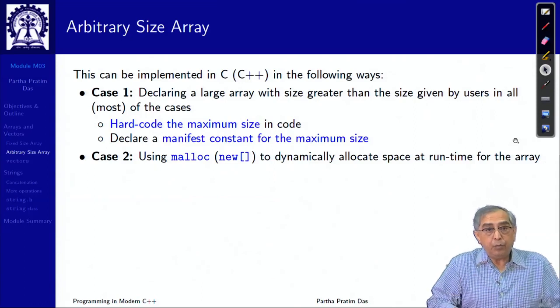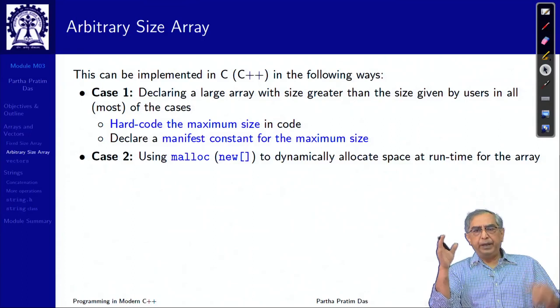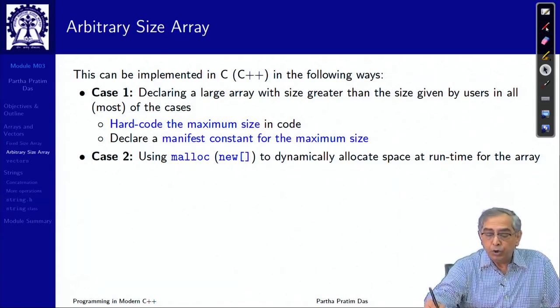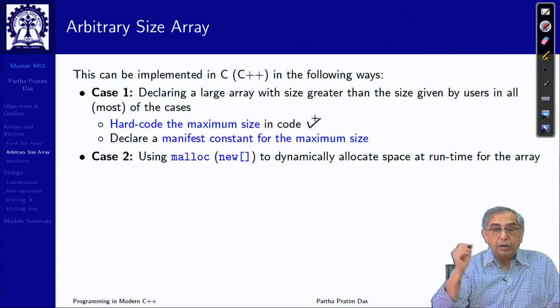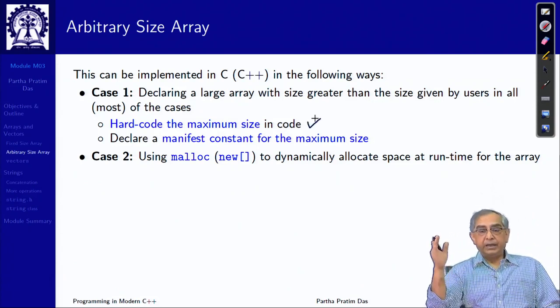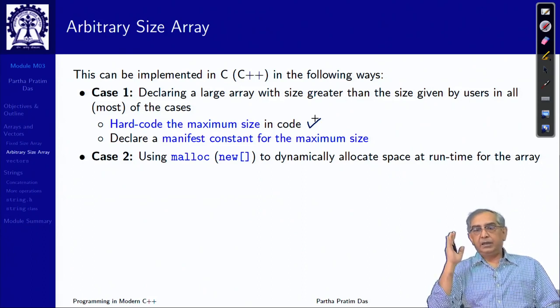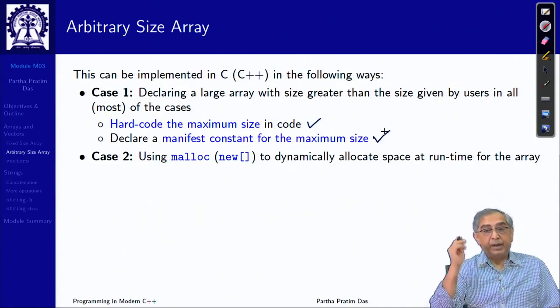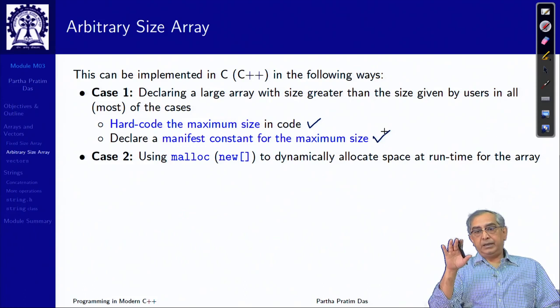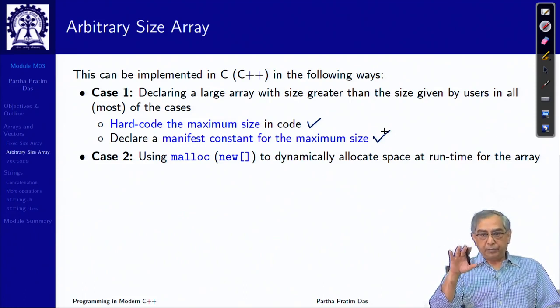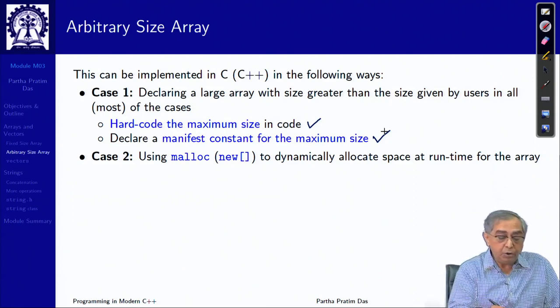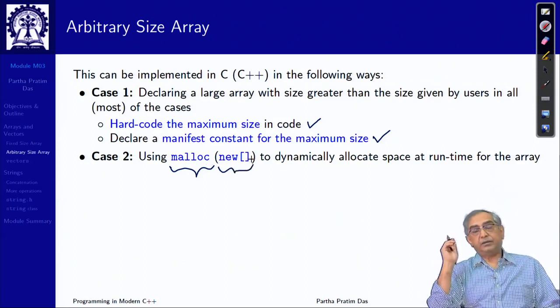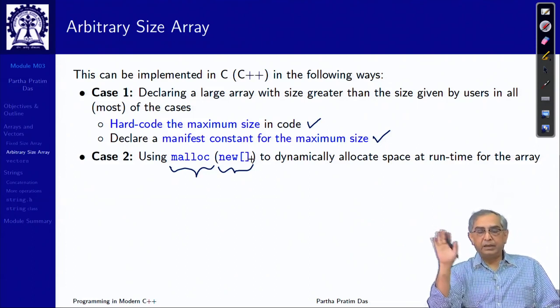Now, we want an arbitrary size array, because we do not know how big it should be. The one option is to declare an array large enough, which is greater than all possible size. And that can be hard coded as a maximum size or declared through a manifest constant. This is not often a preferred approach if you do not really know what is going to be the size. So, you can use dynamic allocation using malloc.